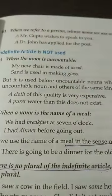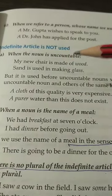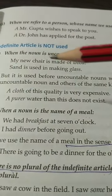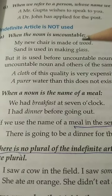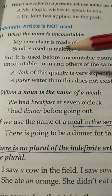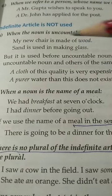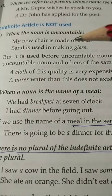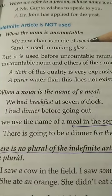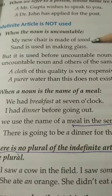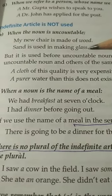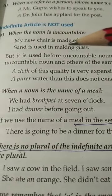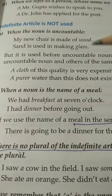Now we look at when the indefinite article is NOT used. First: when the noun is uncountable. When we cannot count the noun, we do not use an indefinite article. Example: 'My chair is made of wood' — we cannot count 'wood', so no indefinite article is used. Second example: 'Sand is used in making glass' — 'sand' and 'glass' cannot be counted.